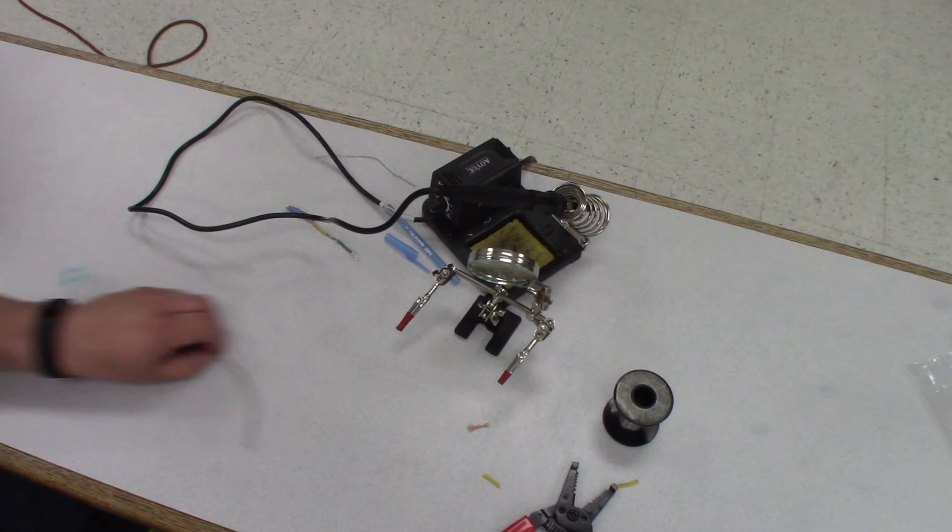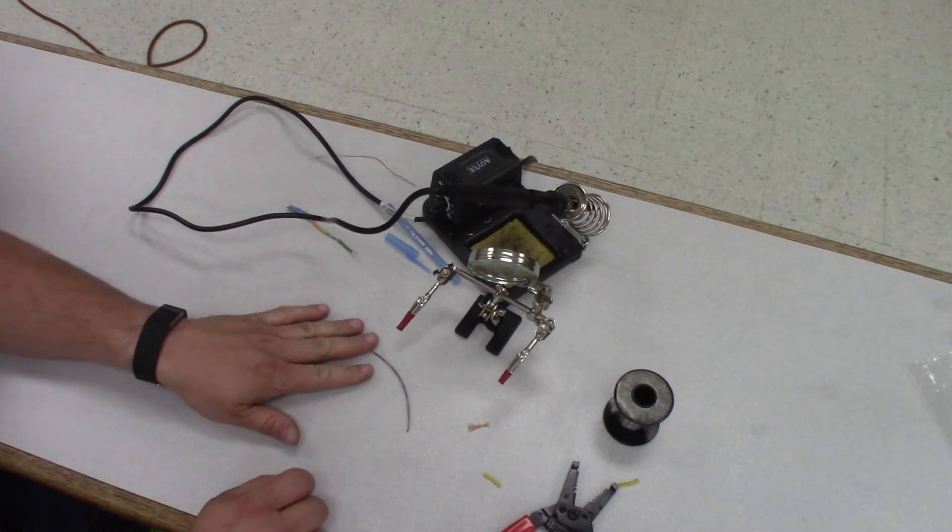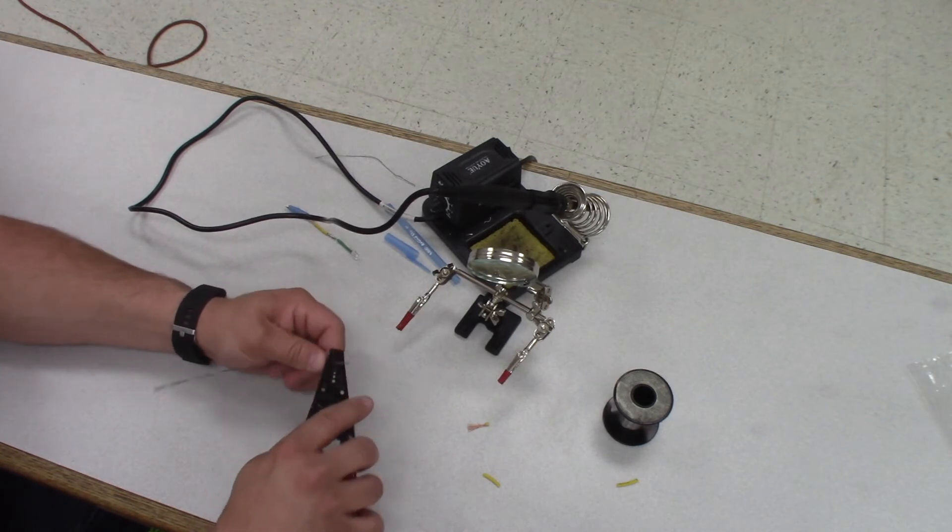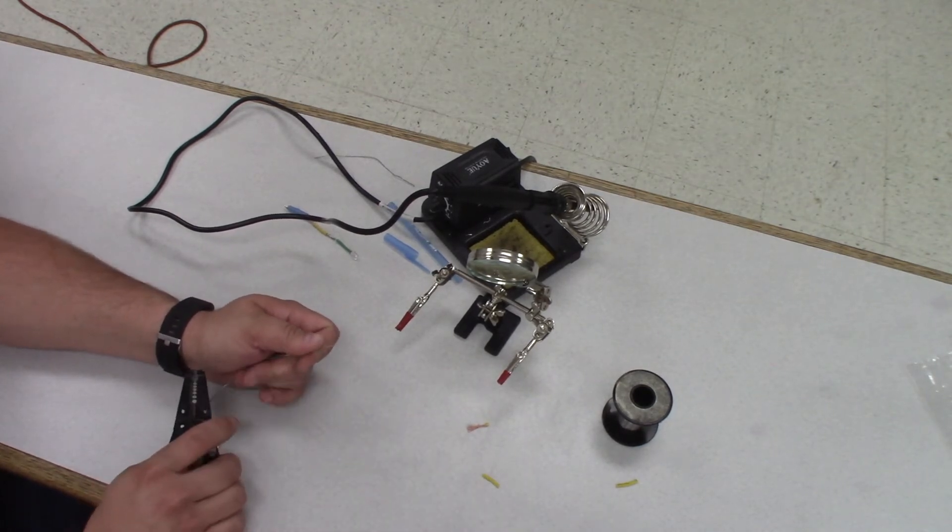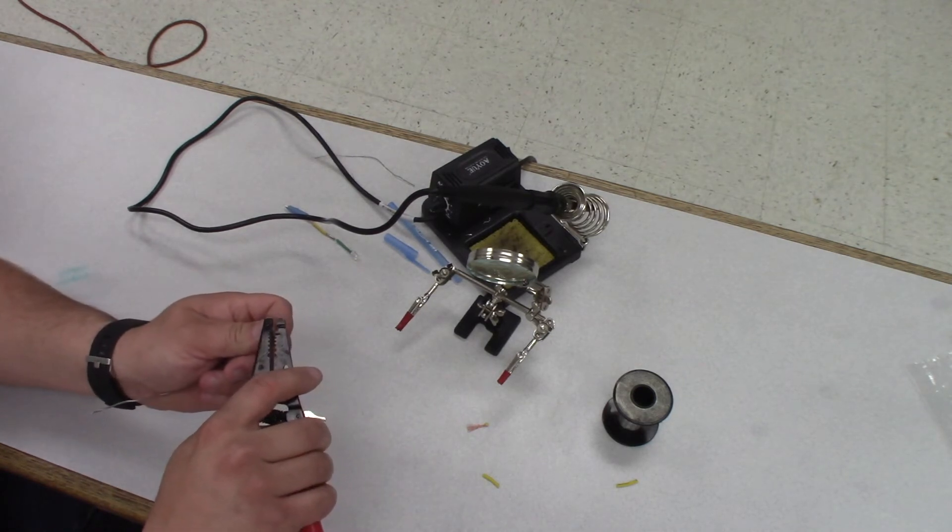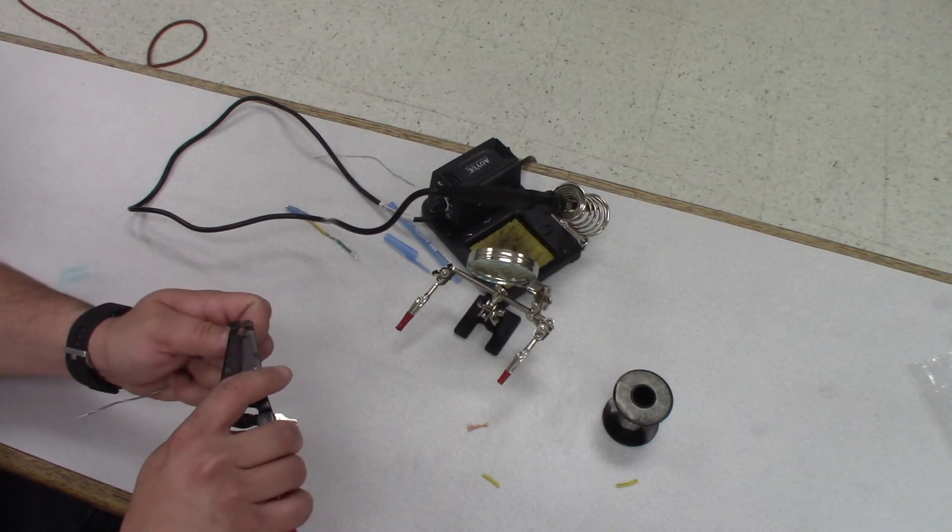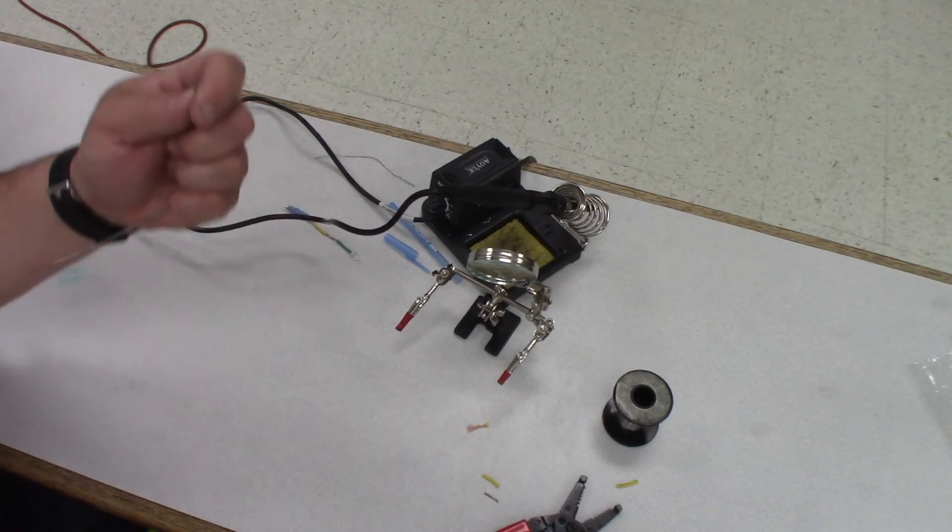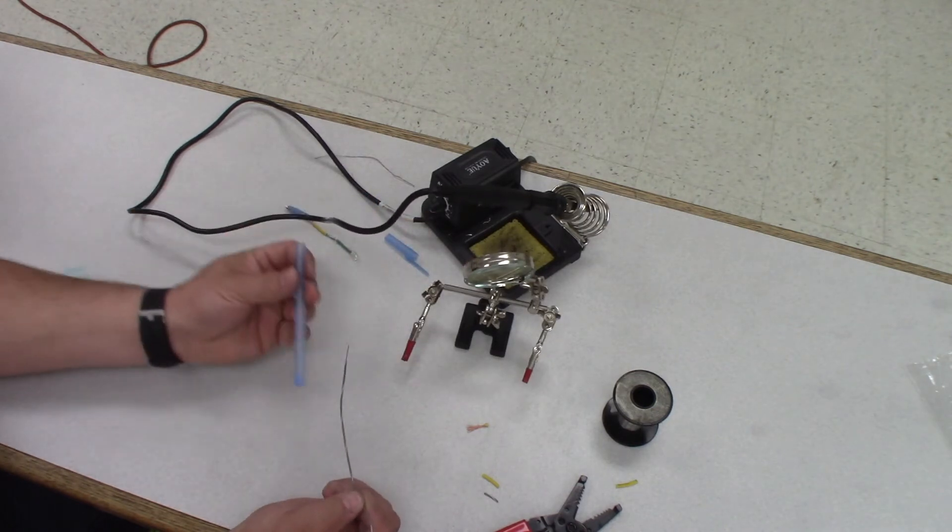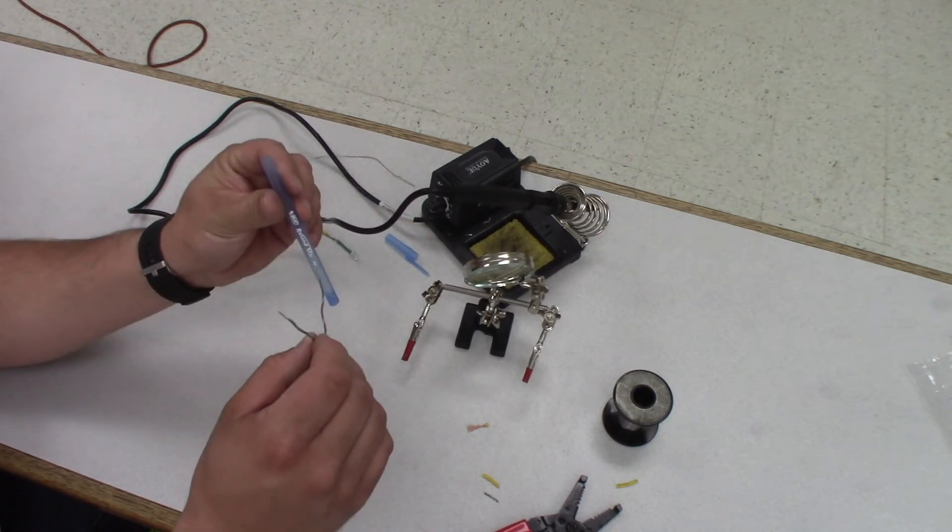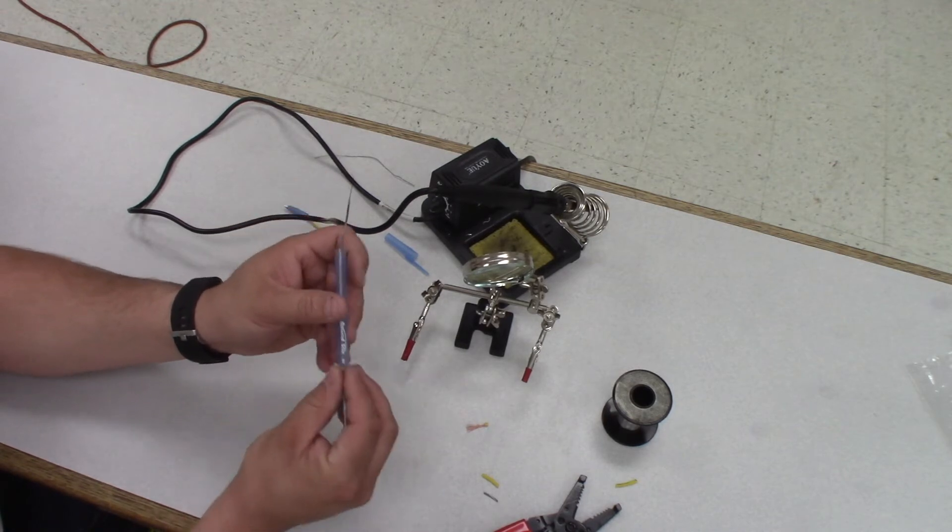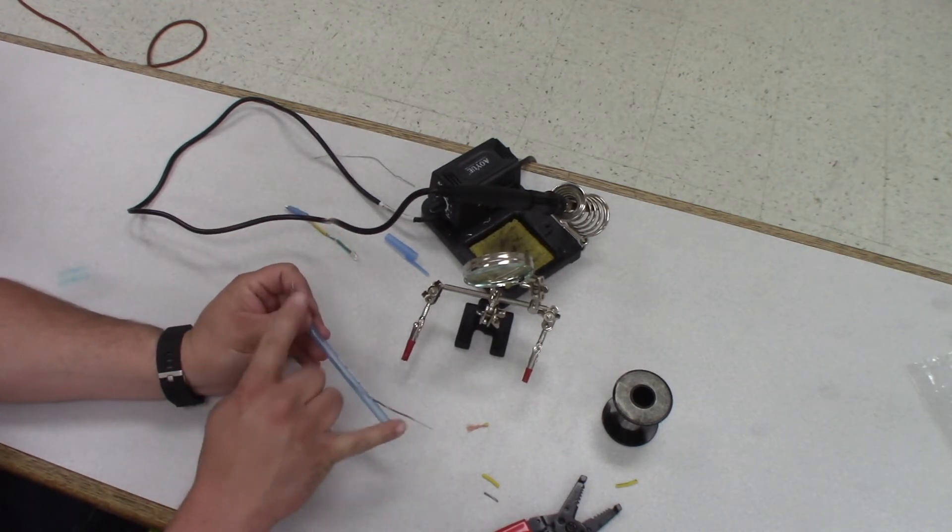Next thing we're going to do is grab our gray wire. We're going to take off just a little bit on either end—nothing super specific, just something that we can use to solder together stuff. We're going to take and strip this. Now we're going to take this gray wire and slide the wire through the hole in the pen. We'll push that through so that we have the stripped ends on either side.